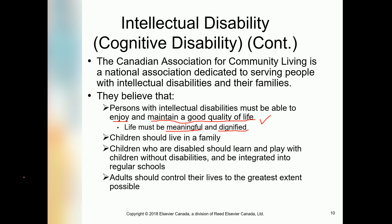Children with disabilities should live in a family and should not be left alone. They should have the chance to learn and play with children without disabilities, and be integrated into regular schools — mixed with healthy students. Children should be given control over their lives to the greatest extent possible, and their parents or guardians must provide all possible facilities, comfort, and assistance.